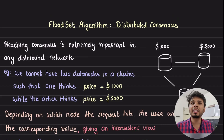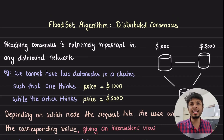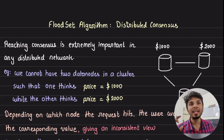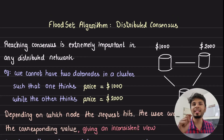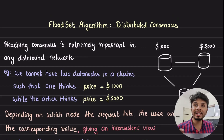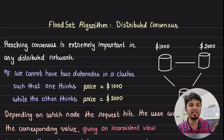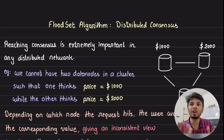Reaching consensus is extremely critical in a distributed system, as we would have situations day in and day out where we need nodes to agree upon a common value. The tricky part is to achieve agreement even when the nodes participating in the consensus crash. In this video we talk about the simplest algorithm called the flood set algorithm that helps us achieve fault-tolerant distributed consensus, and we look at how it fits into the real world and talk about the complexity it incurs.